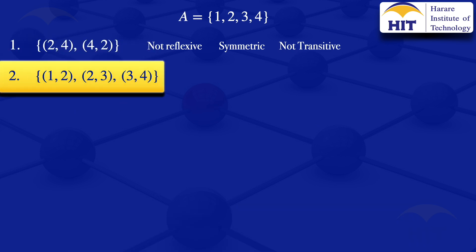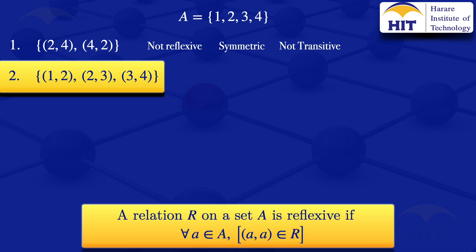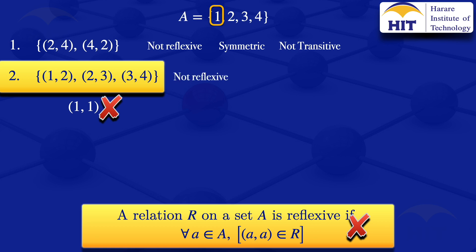Moving on to the second relation with three ordered pairs, I'll start by checking if it is reflexive. A relation is reflexive if for all a in set A, (a,a) is in R. Checking the first element 1, we need (1,1) to be in the relation — but (1,1) is not there. So it has violated the condition for reflexivity, and the relation is not reflexive.